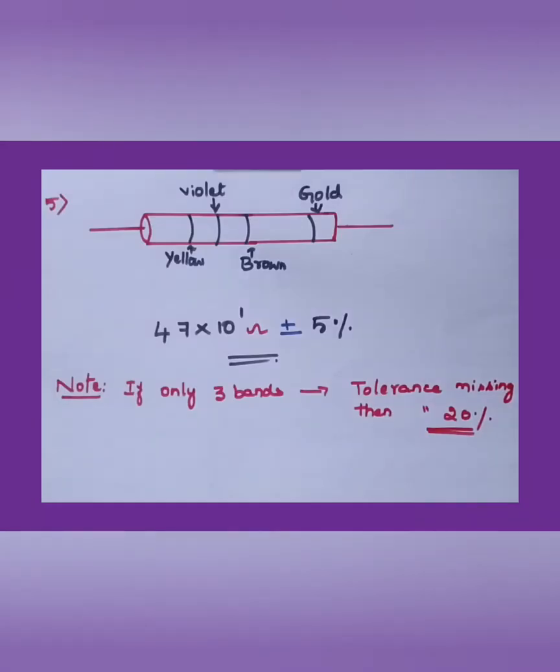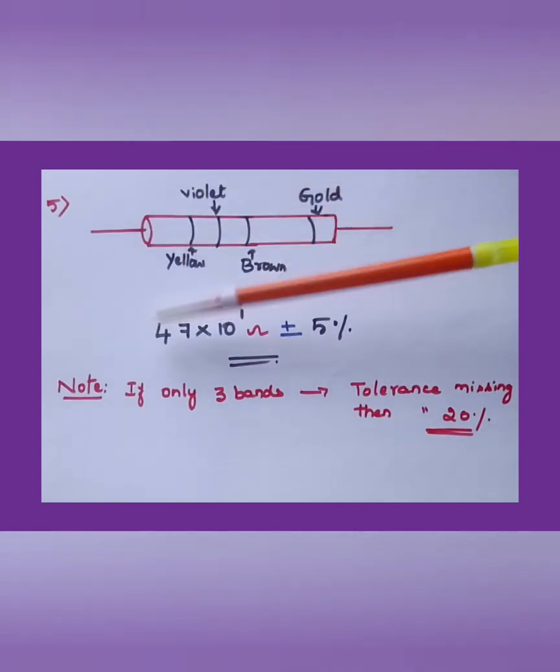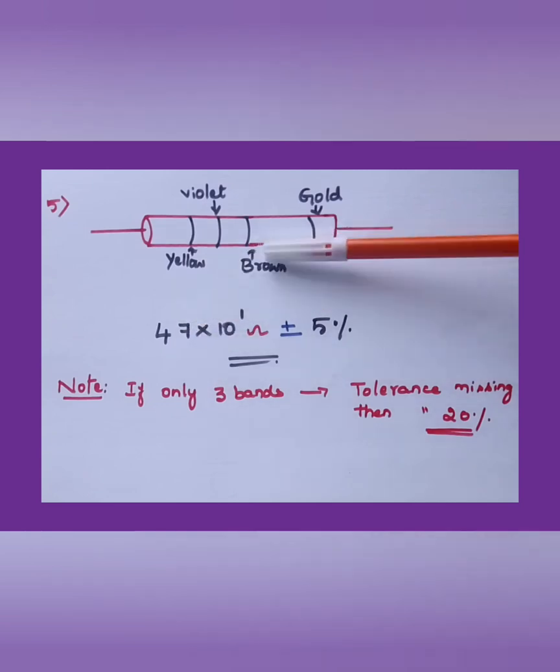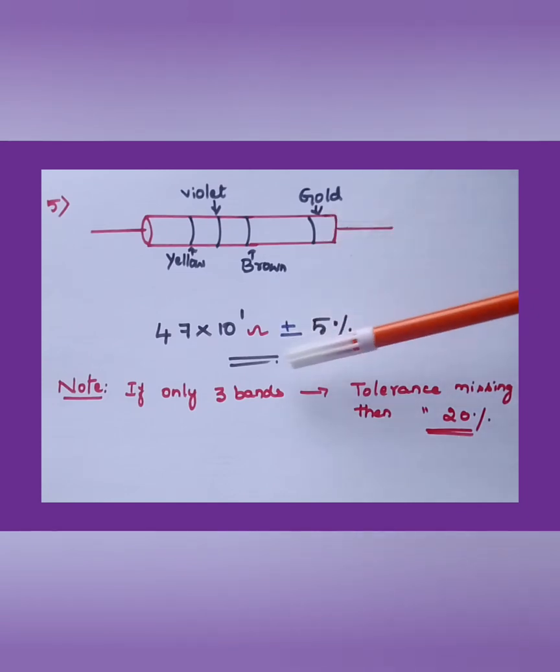If it is given in this form of diagram with mentioning the colors, we can also find out. Yellow, violet, brown, gold. Sometime this may not be cylindrical form, they could give square or rectangle form also, no problem. But check out the colors: first three and the last one. First two, yellow and violet. Yellow 4, violet 7 is the number. For brown, 10 to the power of 1 is the multiple. ± for gold, 5 percentage tolerance.